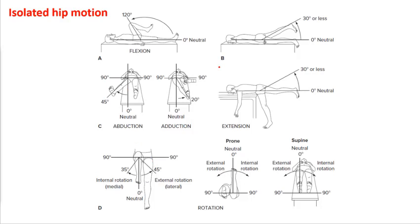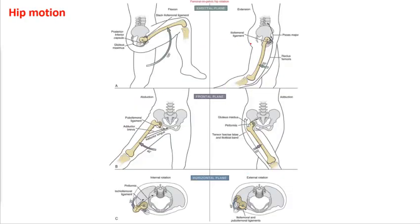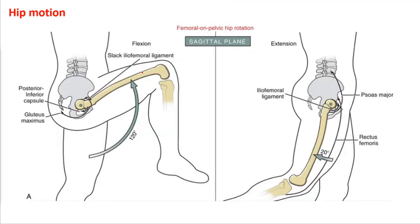This is how you would normally classify hip motion. At the beginning of the semester we went through the movements, and generally what you were seeing is femoral on pelvis motion, where the femur was moving and the pelvis itself was stable. These images are great because they're showing you some of the muscle activity and showing you what is actually being tensed or put on tension — what you're stretching — when you go in those positions.